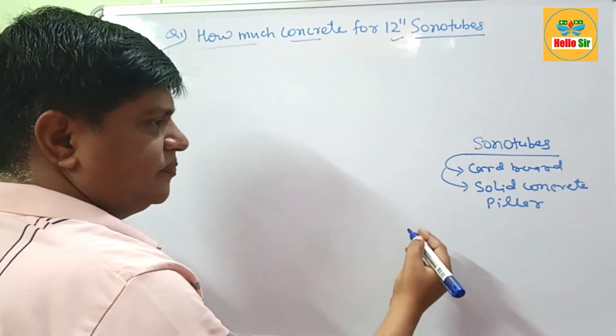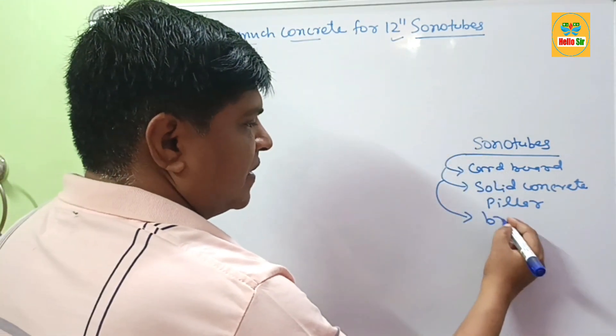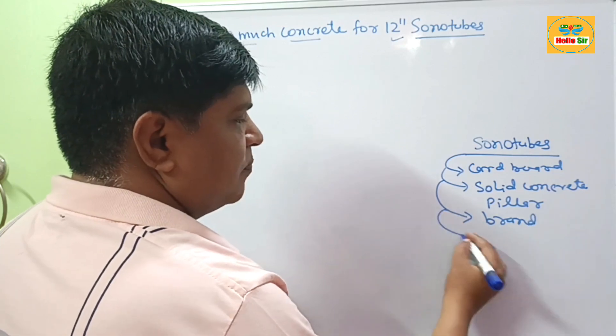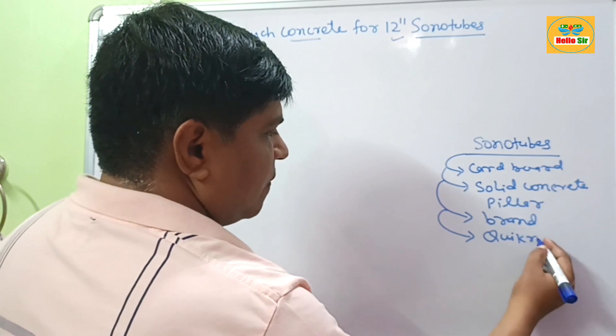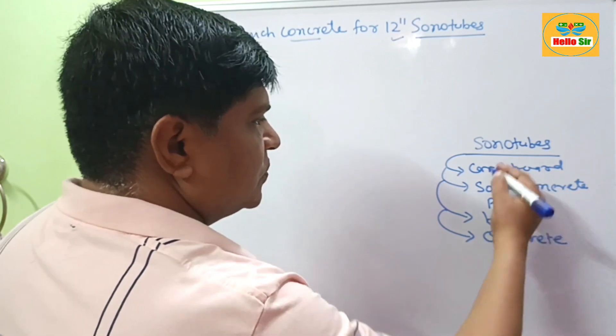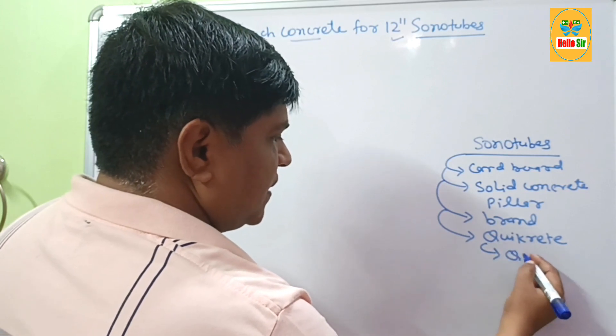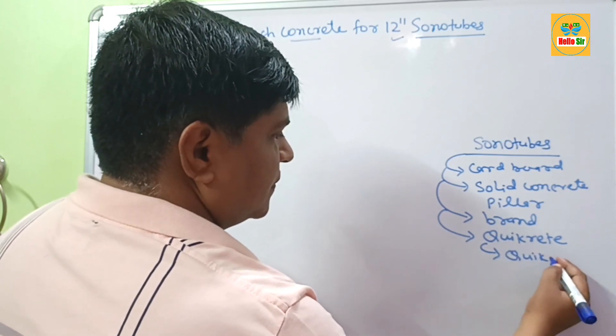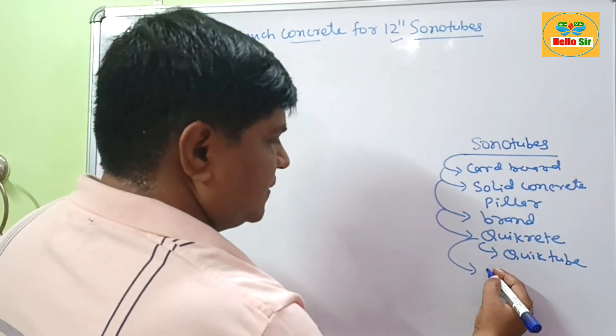Sonotubes is a brand name. Other companies like Quikrete and Sakrete also make their own sonotubes. The Quikrete sonotubes name is Quik-Tube, and the Sakrete sonotubes name is Form-Tube.